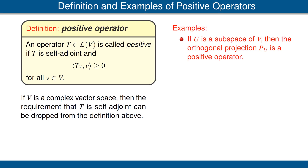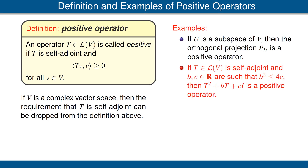Let's look at some examples of positive operators. For our first example, suppose U is a subspace of V. In that case, the orthogonal projection P_U onto U is a positive operator — you should pause the video and verify that for yourself. For our second example, suppose T is self-adjoint and b and c are real numbers such that b² < 4c. Then T² + bT + cI is a positive operator. Again, you should pause and verify this for yourself. If you get stuck, look at the book.